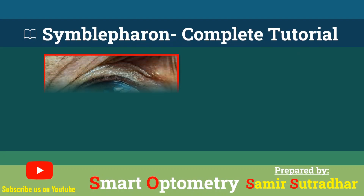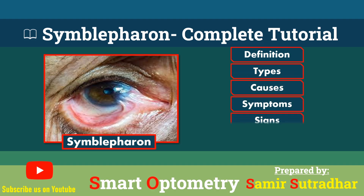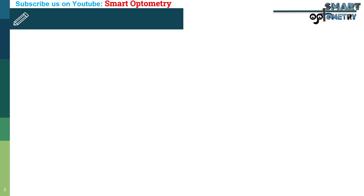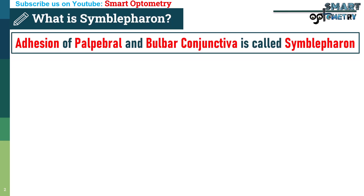In this video, we will discuss Symbolpheron and you will learn about Definition, Types, Causes, Symptoms, Signs, Complications and Treatment. What is Symbolpheron? The adhesion or attachment of palpebral and bulbar conjunctiva is called Symbolpheron.